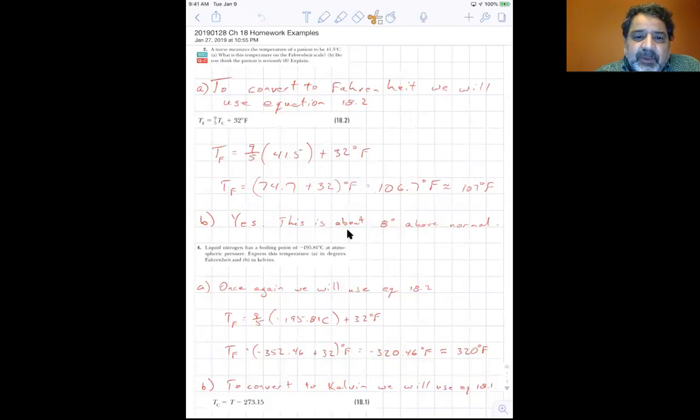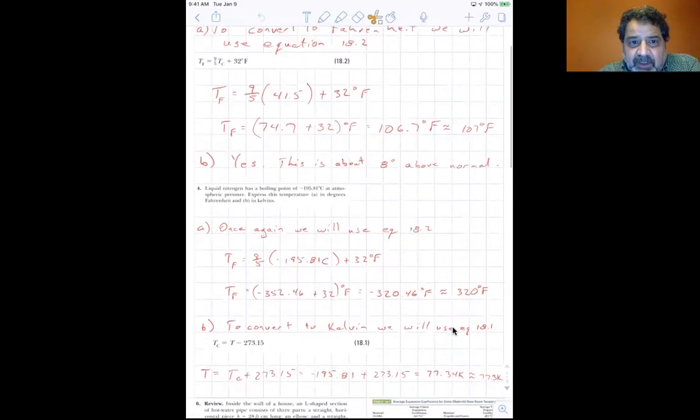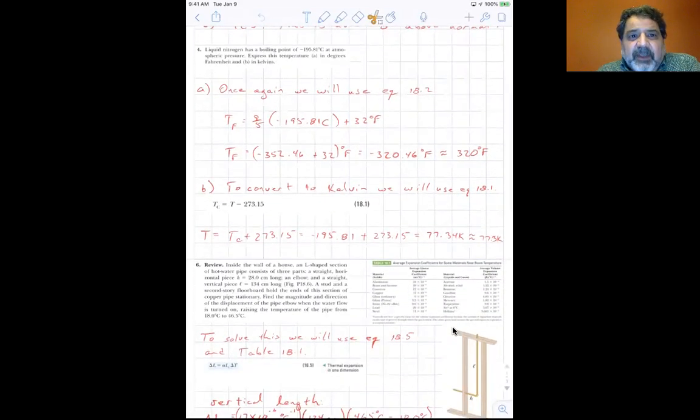Okay, let's do another one. Liquid nitrogen, I showed you in the class, I showed you a video of liquid nitrogen releasing some pressure. So liquid nitrogen has a boiling point of minus 195.81 degrees Celsius at atmospheric pressure. Express the temperature A in degrees Fahrenheit, and B in Kelvin. Once again, we'll use equation 18.2.